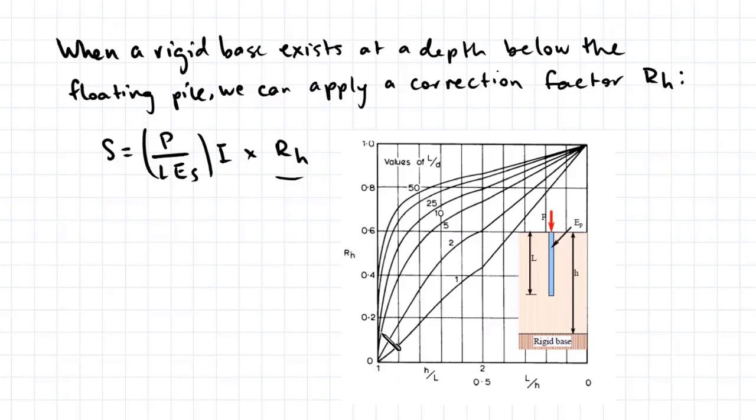You need to find the ratio of H and L, and see which horizontal axis this ratio lies within, and then project upwards to the value of L on D, and then project horizontally to get a value for RH.